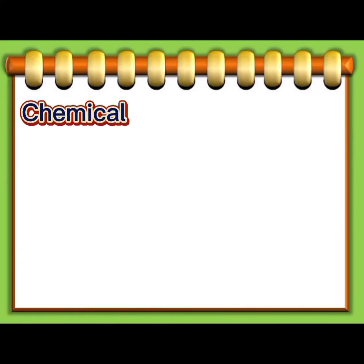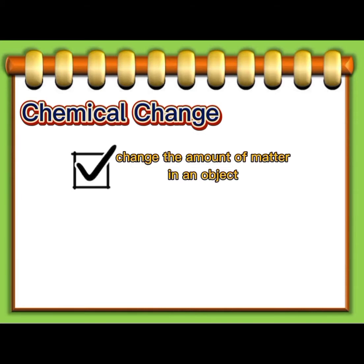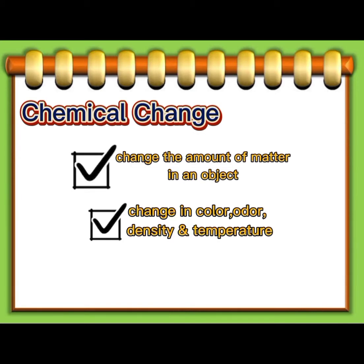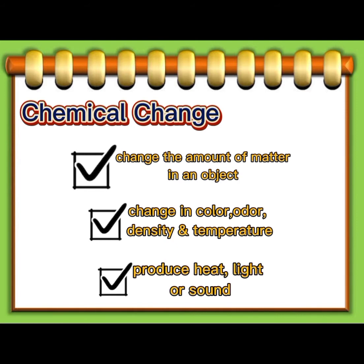Now, let's learn about chemical changes. Chemical changes are those changes that change the amount of matter in an object, and some new type of matter is formed that looks entirely different from the original matter.